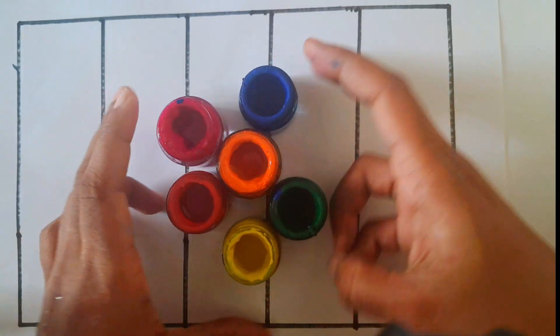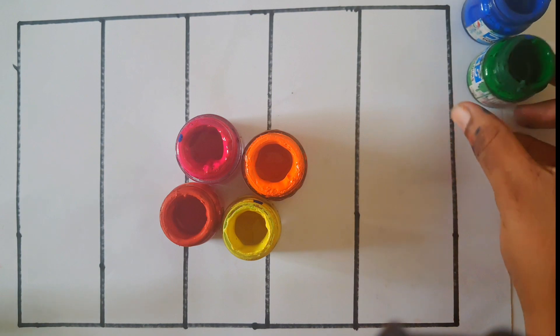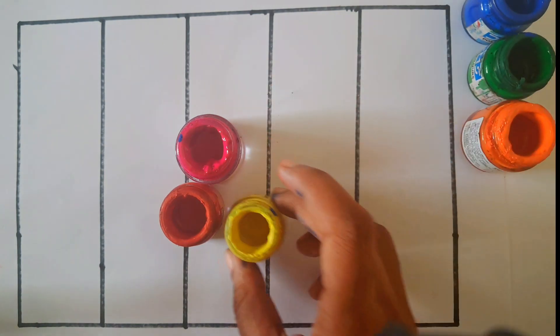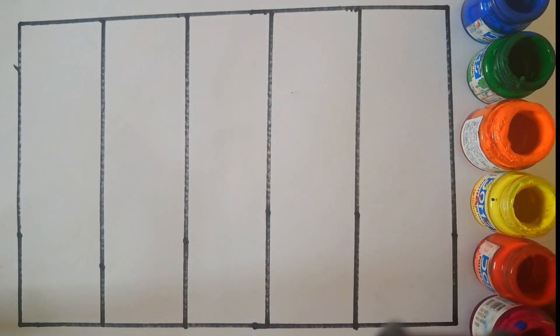Hi kids, learn colors: blue color, green color, orange color, yellow color, red color, pink color.